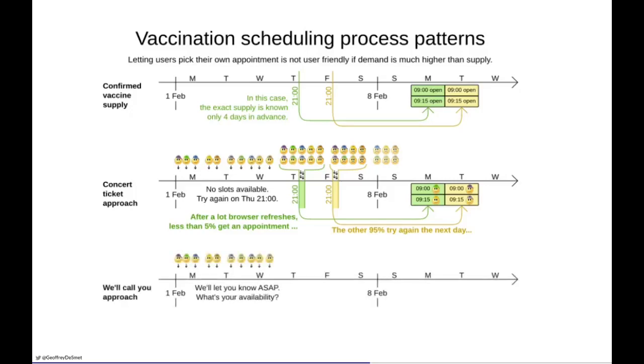What's the other approach? In the other approach, when they come to the website, we'll say, okay, we register you. We ask for your availability on the next few weeks. And based upon that, as soon as vaccination slots open, we actually calculate...